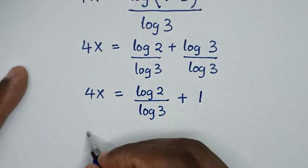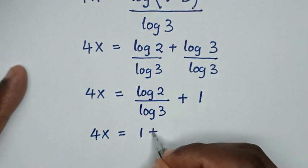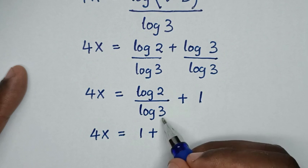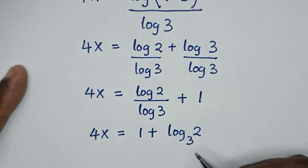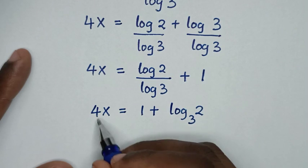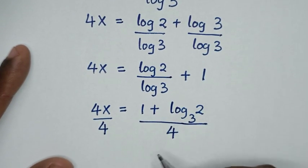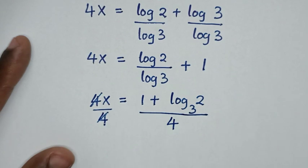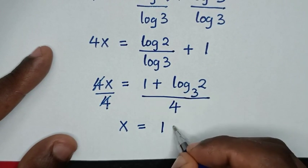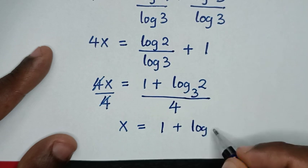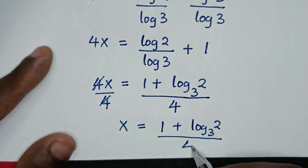Then it will be 4x is equal to 1 plus log of 2 over log of 3, which is the same as log base 3 of 2. Then we'll divide by 4 on both sides, so 4 and 4 cancel, giving x is equal to 1 plus log base 3 of 2, all over 4.